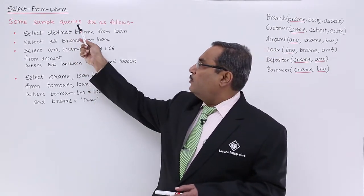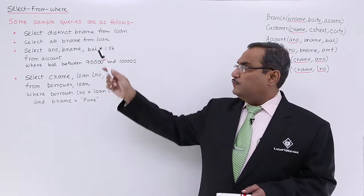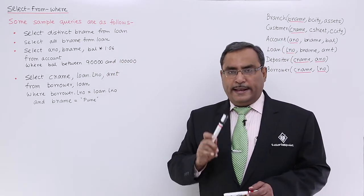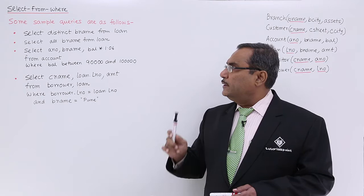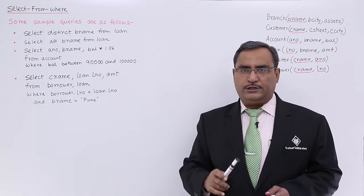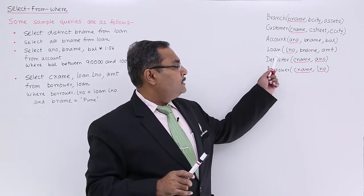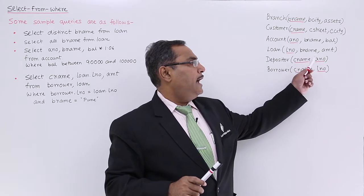Let us go through some examples for better understanding. Some sample queries are as follows. For the first query, list all distinct branch names from the loan relation. Loan has loan number, branch name, and amount.